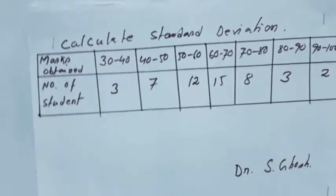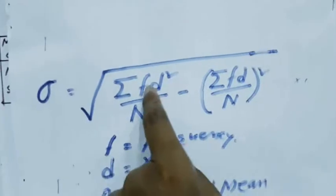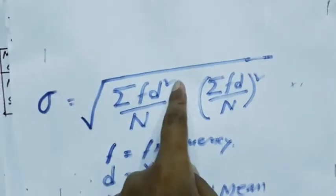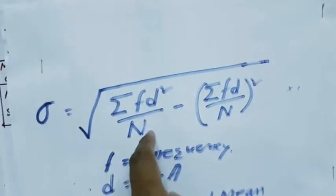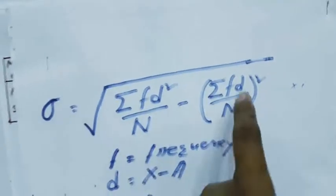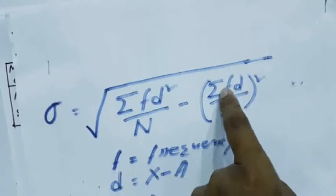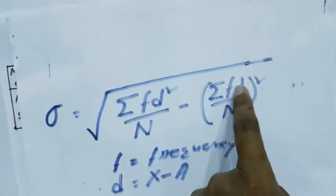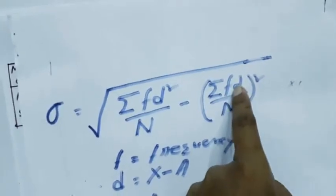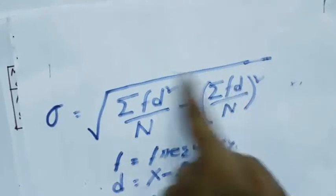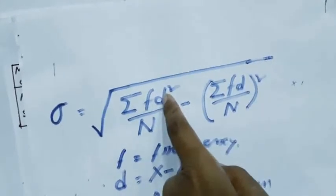Now, how will you solve this? What is the demand of the formula? We have to get FD square and N, N automatically we will get, sum of frequency, and F into D. It means we have to make a column for D, then FD, then FD square.